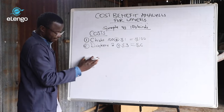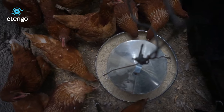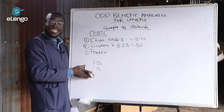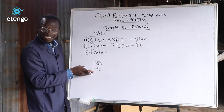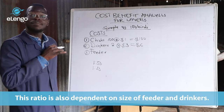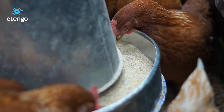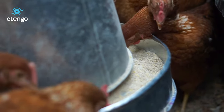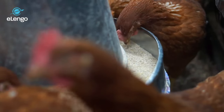You will also need feeders. The same principle of one feeder per 50 birds applies. But the size and type of feeder really determines adoption of this ratio. This ratio is only applicable to the person who is using a bell feeder of at least 8 kgs. That is the only time this ratio can apply. Failure to use this bell feeder, don't use this ratio.